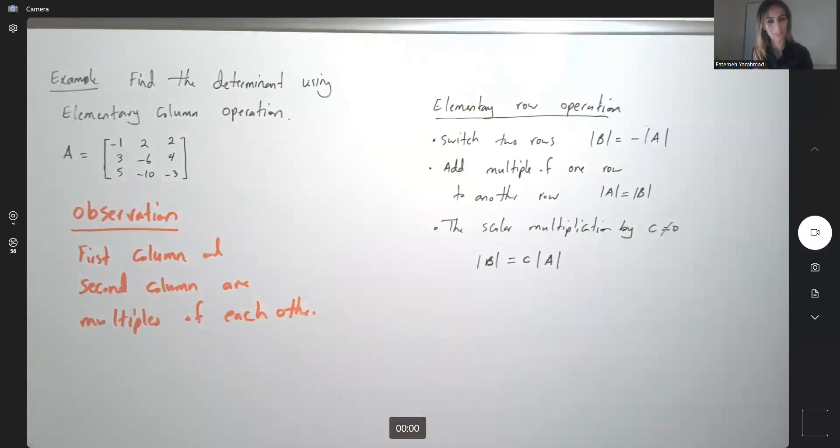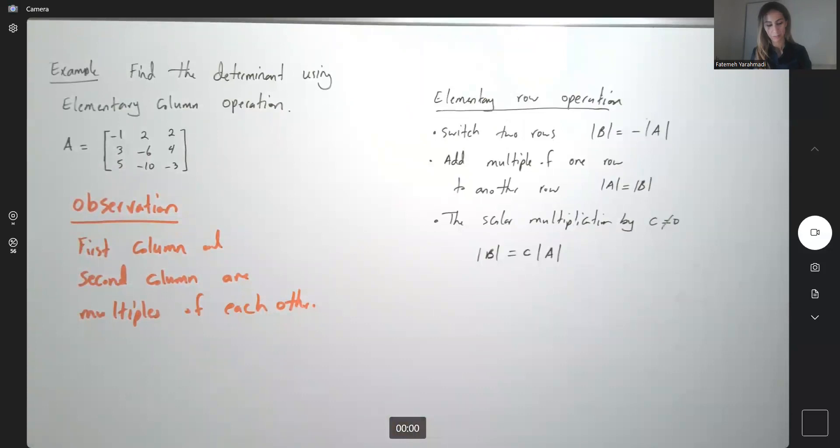So what are we going to do? We're going to multiply the first column by 2, 2 times column 1, and add it to the second column. And this guy becomes your new second column. Take a look at this.